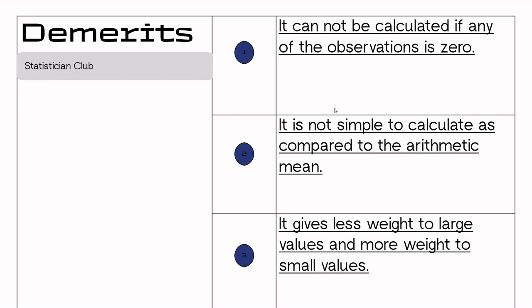Demerits. It cannot be calculated if any of observation is zero. Suppose your formula for ungrouped data is small n over sum of 1 over xi. If your observation is zero, then 1 over zero is equal to zero.